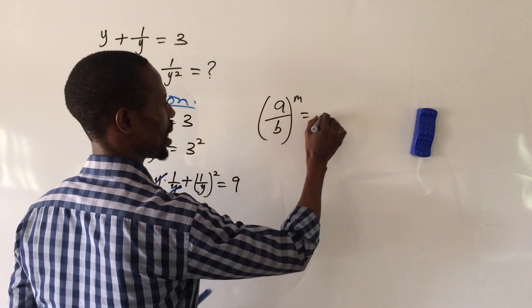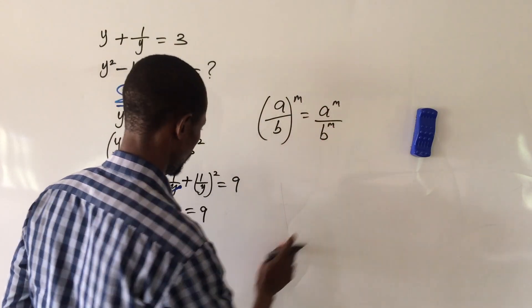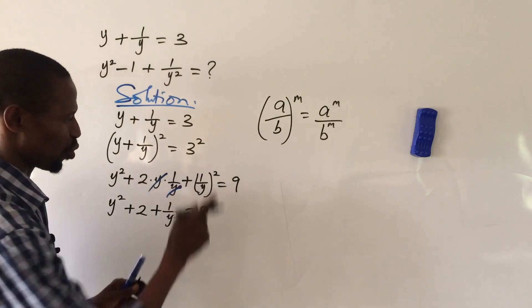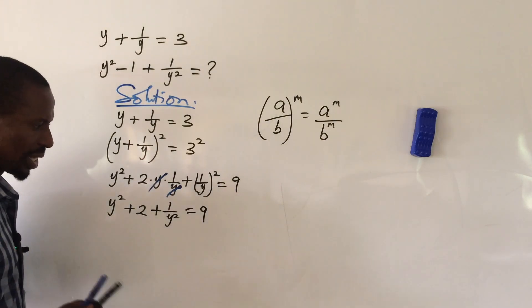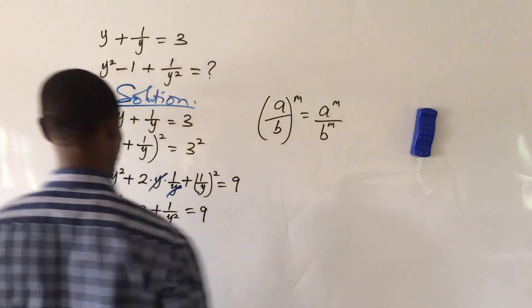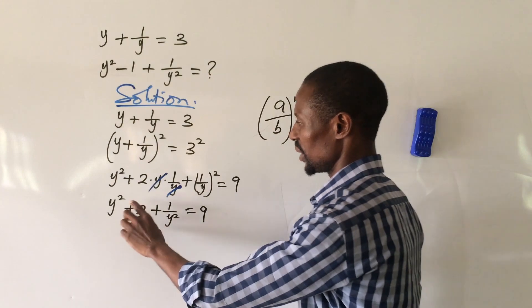If you apply that here, the square of 1 is 1 and the square of y remains y squared. Now if you look at this carefully, from here we have y squared, we have 1 over y squared.